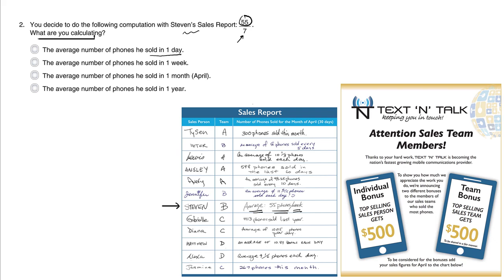He doesn't sell 55 phones in one day — he sells 55 phones in a week. So when you divide by 7 days, you get the average number of phones sold in one day. This is correct; every other choice here is unreasonable.